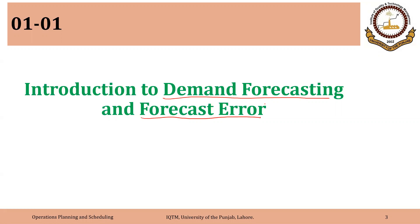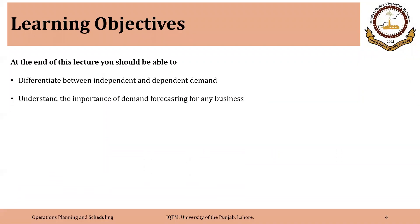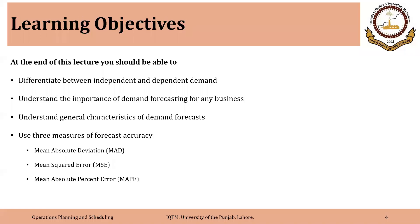Specifically, we will focus on forecast accuracy or forecast error — how we can calculate it and what different measures of forecast error show us. The learning objectives of part one are to differentiate between independent demand and dependent demand, understand the importance of demand forecasting for any business, and discuss some general characteristics of demand forecasts. We will also learn to use three measures of forecast accuracy: mean absolute deviation, mean squared error, and mean absolute percent error.